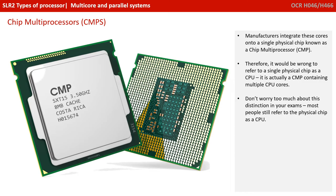Manufacturers integrate these cores onto a single physical chip known as a chip multi-processor, or CMP. Therefore, it's technically wrong to refer to a single physical chip these days as a CPU, as it tends to be a CMP containing multiple CPU cores. But you don't need to worry too much about this distinction for exams — most people still refer to the physical chip as a CPU.